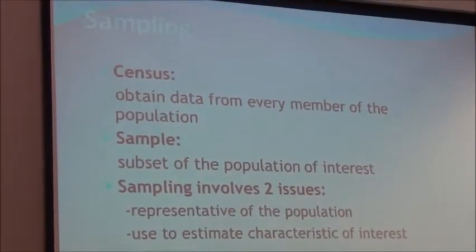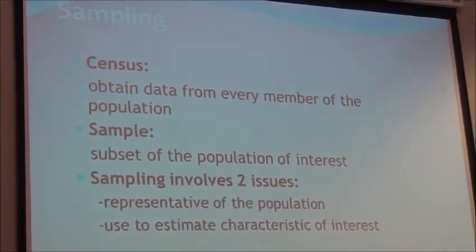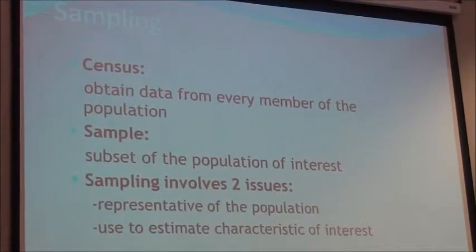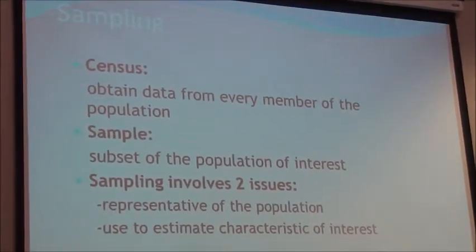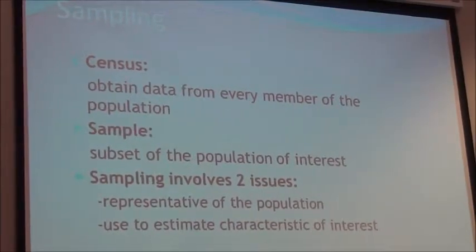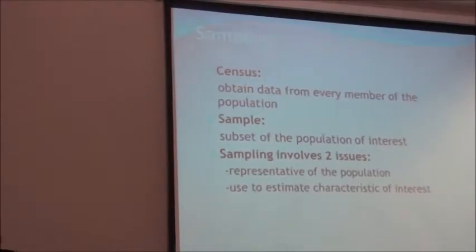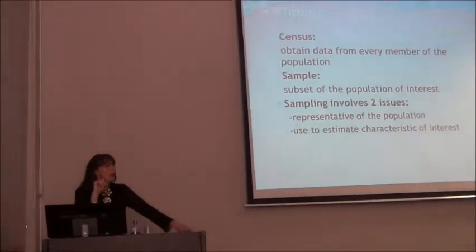In sampling there are two ways of doing it. The first is a census. When you conduct a census, you're taking the whole population as the sample, so you have a perfect dataset. That's why the government undertakes a census — to get hold of every element in the population. But most of us can't do that.